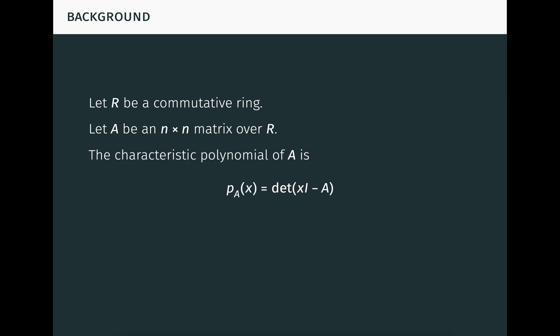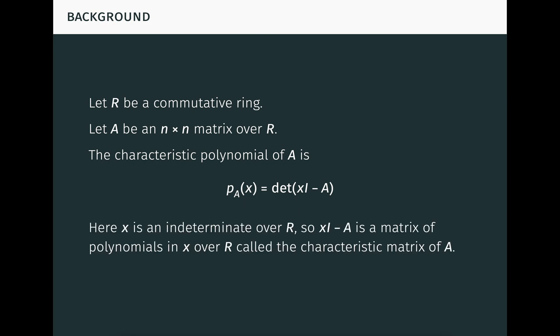Recall that the characteristic polynomial of A is defined like this. Here x is an indeterminate over R, so xI minus A, where I is the n by n identity matrix, is a matrix of polynomials in x over R of degree at most 1, which is called the characteristic matrix of A. The determinant of this matrix is a polynomial in x of degree n.